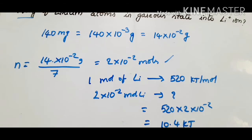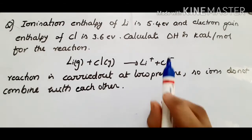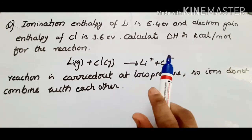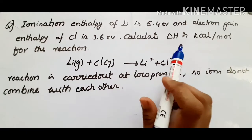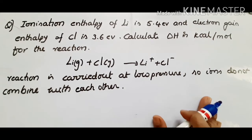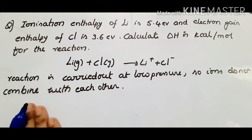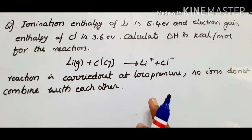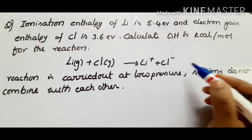Let's move to another question. The ionization enthalpy of lithium is 5.4 eV and the electron gain enthalpy of chlorine is 3.6 eV. You are given two atoms — calculate ΔH in kilocalories per mole for the reaction shown. This is a very common exam question. The condition states the reaction is carried out at low pressures, so ions do not combine with each other.